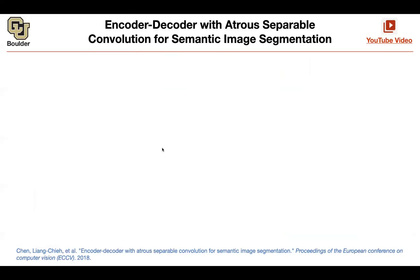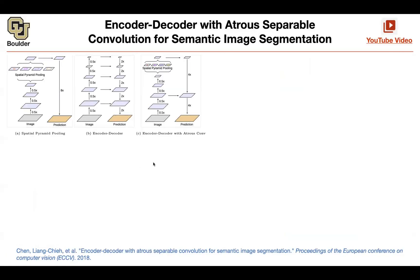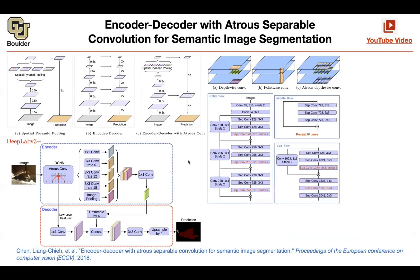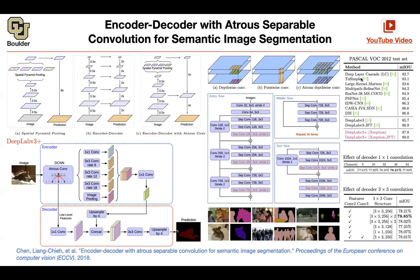This one has an assignment for you to watch — this is DeepLab version 3 plus. Are there any questions about it? You are going to rely on the Exception architecture with some modifications, replacing your pooling layers with convolutional layers with some stride so that they are fully convolutional.